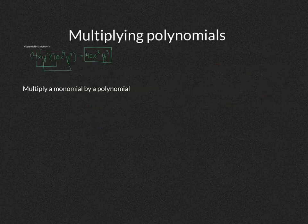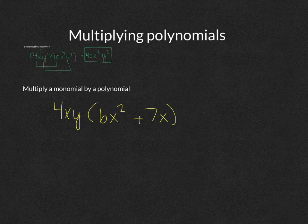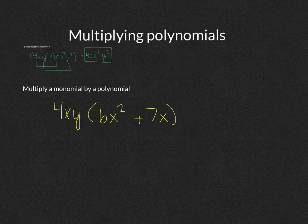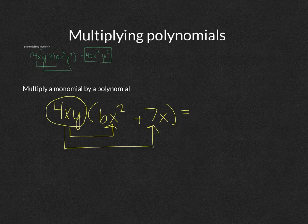Now let's look at how we would multiply a monomial by a polynomial. Let's say I have 4xy again, but I'm going to multiply it by 6x squared plus 7x. The 4xy is a monomial because there's only one term. The 6x squared plus 7x is a binomial because there are two terms. When multiplying a monomial by any polynomial, I take 4xy and multiply it by the 6x squared first.